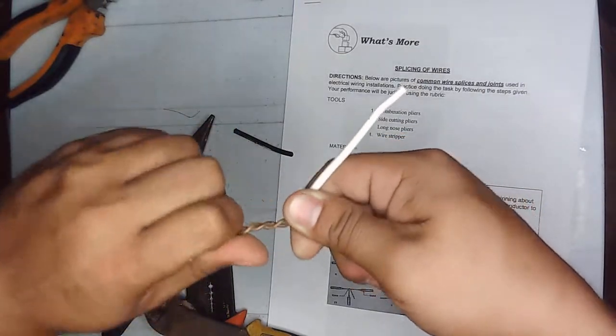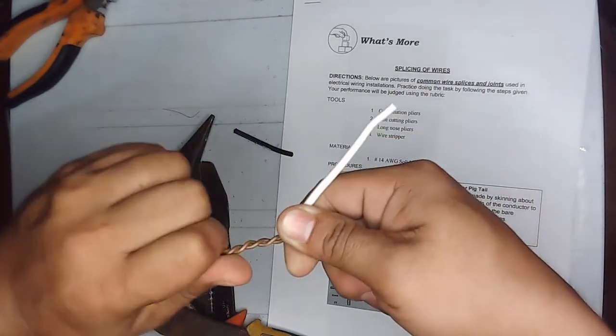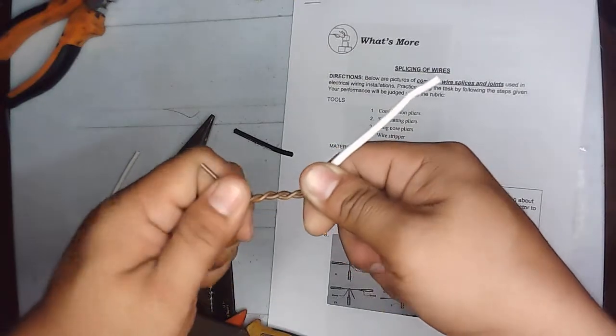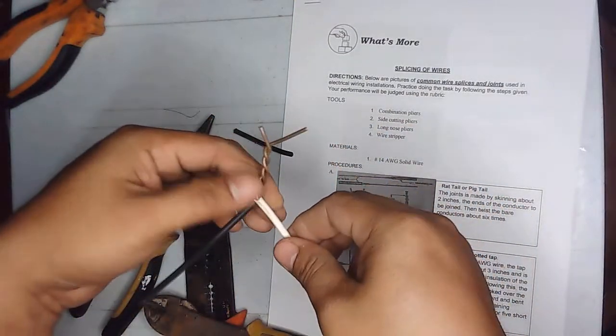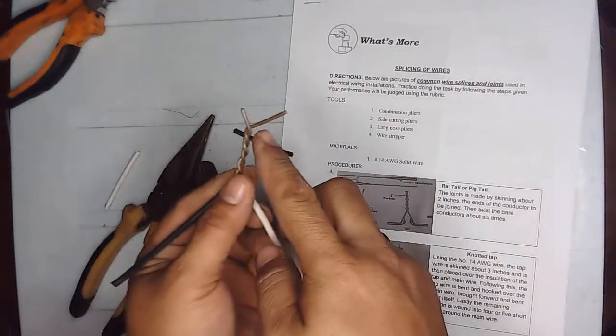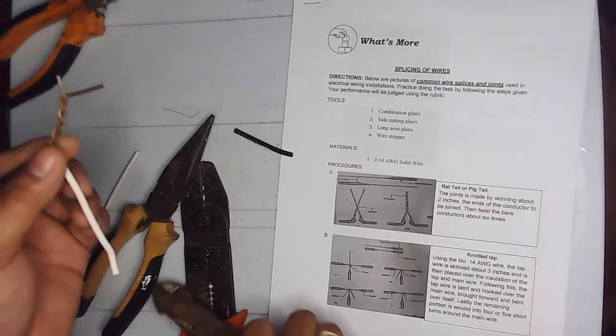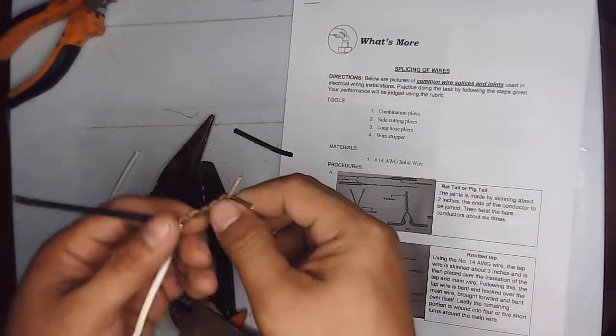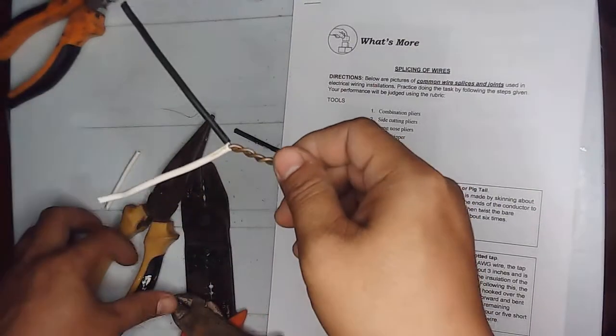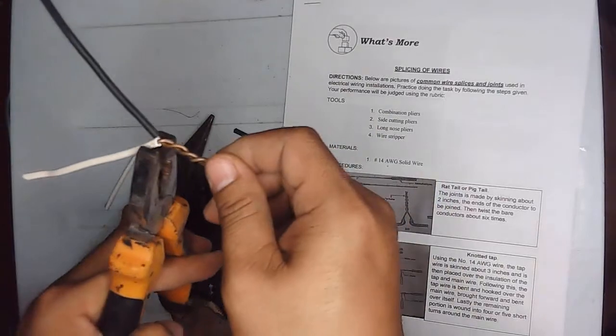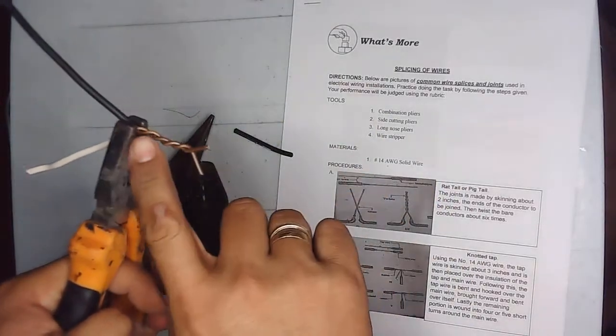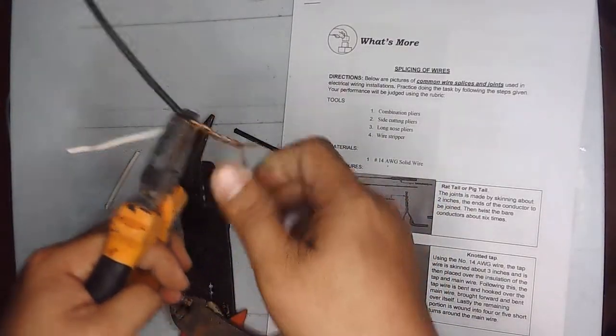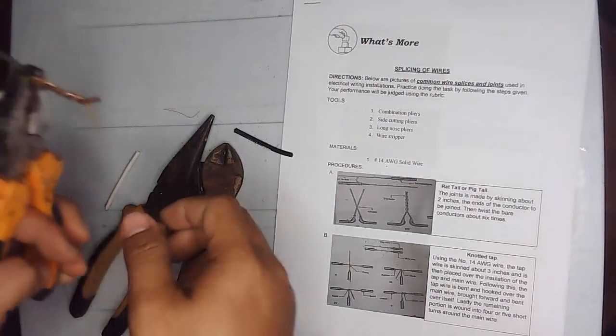Make sure it is evenly twisted. Since this one is longer, I'll just cut this part to make it equal. Then using the combination pliers to hold the wire...